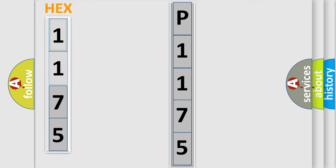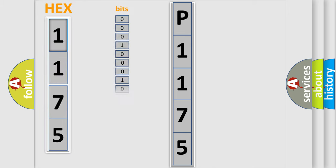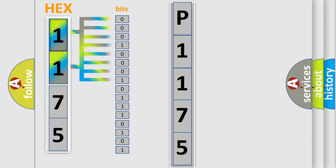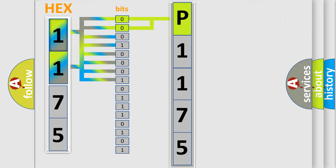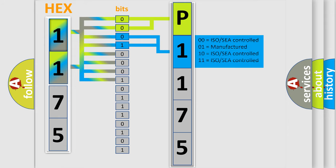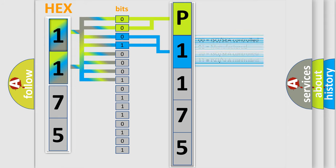The error code is split into two bytes consisting of 16 bits. One bit is the basic unit that each computer works with. The bit has two logical states: zero, low level, and one, high level. By combining the first two bits, the basic character of the error code is expressed. The next two bits again determine the second character. The last bits of the first byte define the third character of the code.